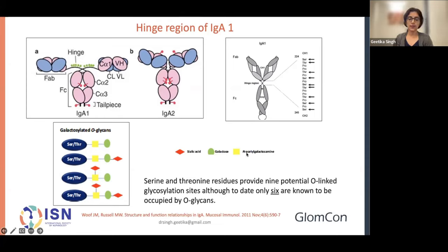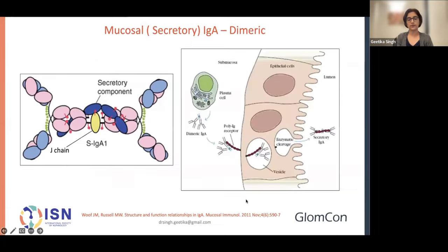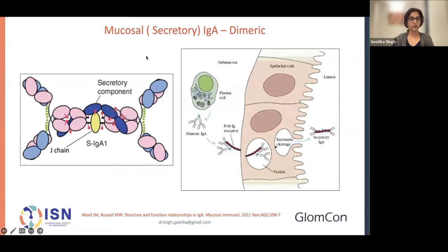Out of the nine potential O-linked glycosylation sites, to date we only know that six can be occupied by O-glycans. The serum IgA is monomeric, while the mucosal secretory IgA is dimeric — two monomers connected by a very important J-chain, and they also have a secretory component attached.